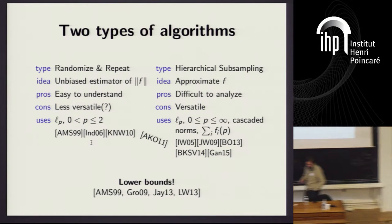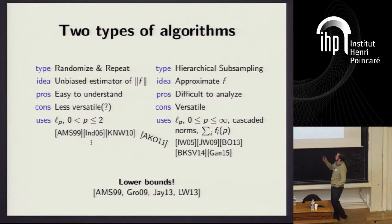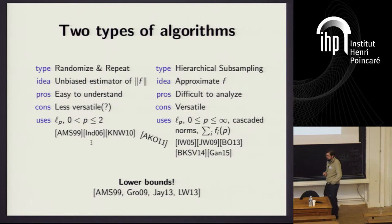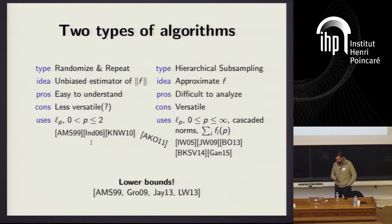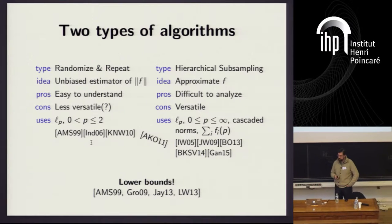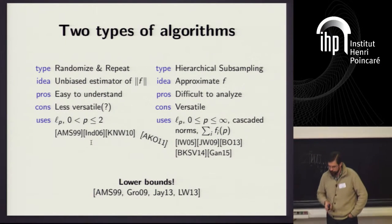There are also plenty of matching lower bounds. All of the norms I've mentioned here have optimal algorithms and matching lower bounds — strong unconditional lower bounds in the streaming model. If I have some time at the end I'll tell you about lower bounds. For us, for streaming symmetric norms, mostly I'm going to talk about the algorithm. I'm going to show you matching upper and lower bounds for symmetric norms.